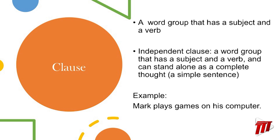Here's an example of a simple sentence, or independent clause: "Mark plays games on his computer." Very simple. We have our subject, Mark. What is he doing? He's playing. And what's our predicate? He's playing games on his computer.